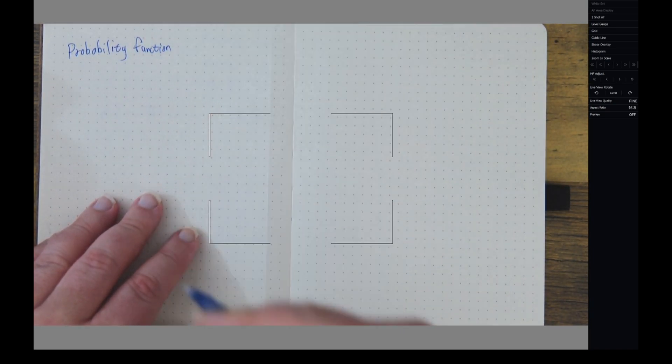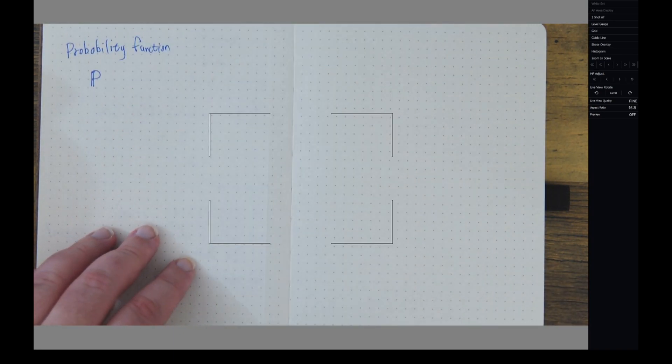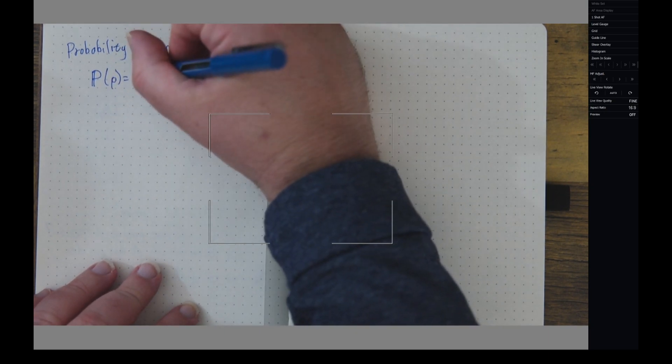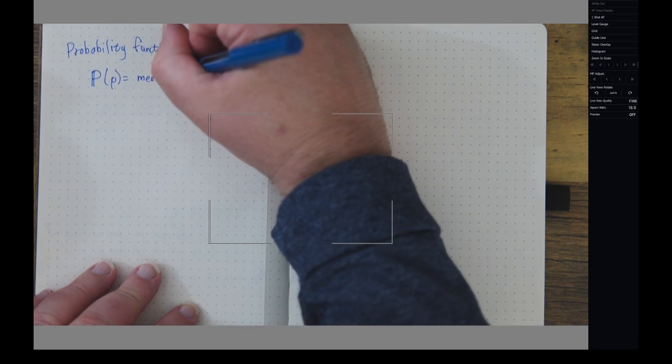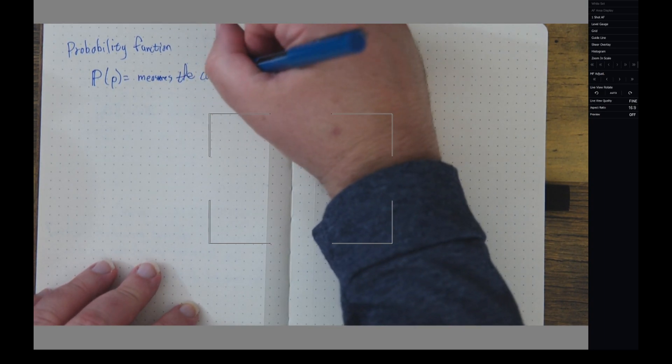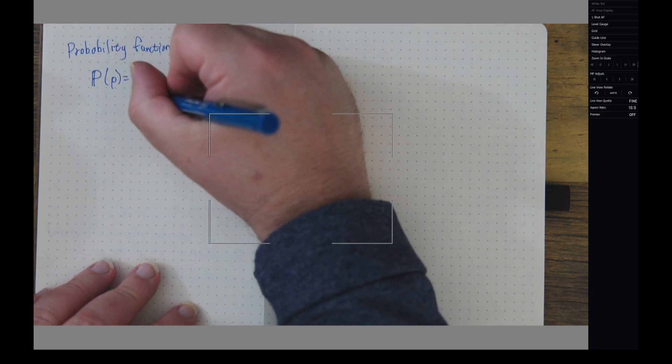And when we have a probability function, we typically use a blackboard boldface P. That's like a capital P, but with an extra stroke drawn. And this measures the chance that statement p is true.